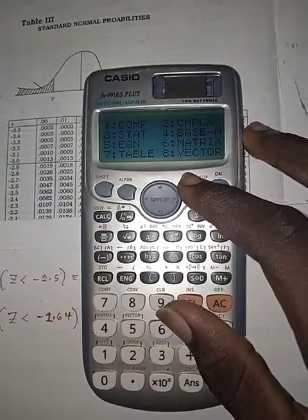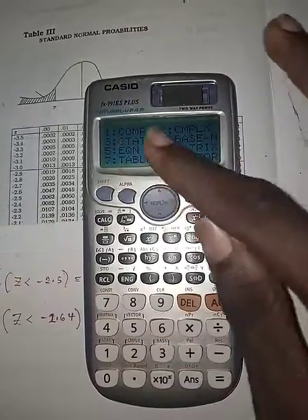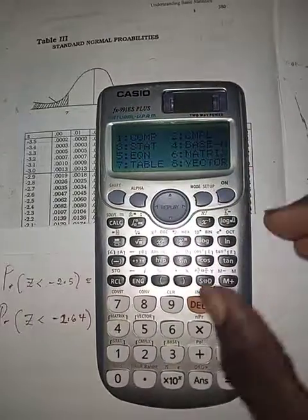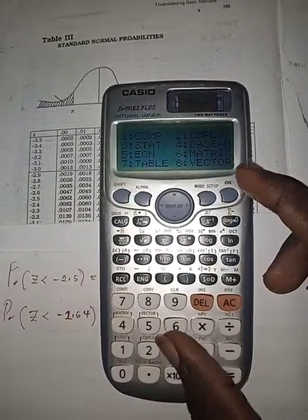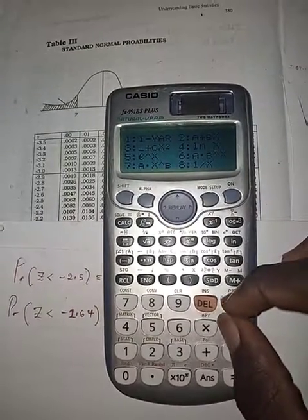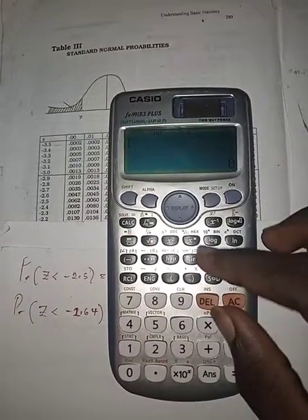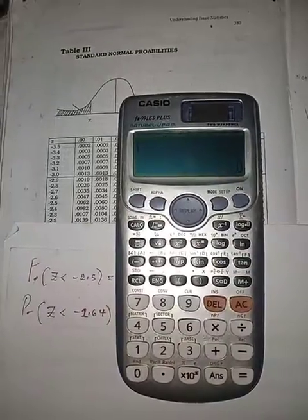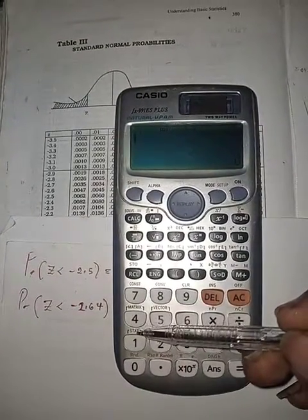All you need to do is press mode, put your calculator on statistics mode, that's number 3. You don't have any business with all this, just press AC, and then you'll see another statistics mode.